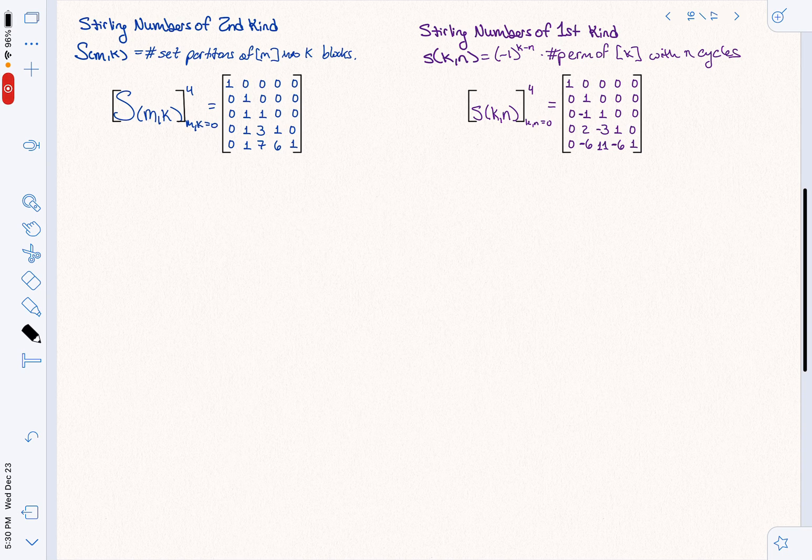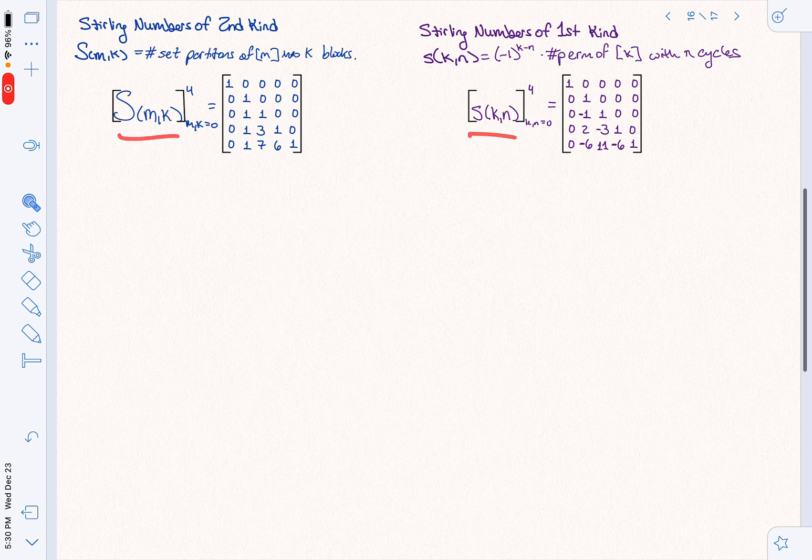We've looked separately at the Stirling numbers of both kinds. We've seen nice formulas for both of them in special cases, and that they both exhibit nice recurrence relationships. Now I want to talk about the relationship between these two types of numbers, and to do that, it's best to look at them as an array.